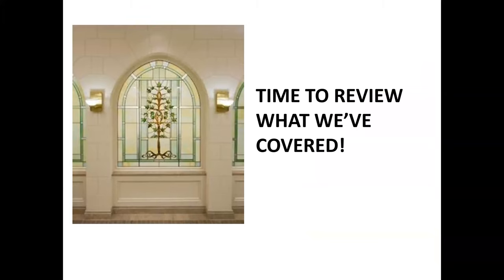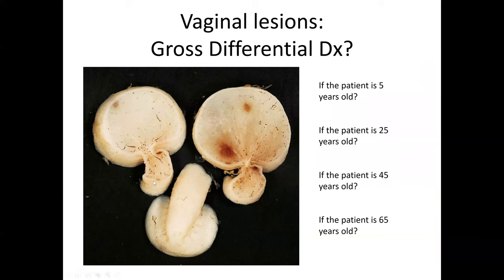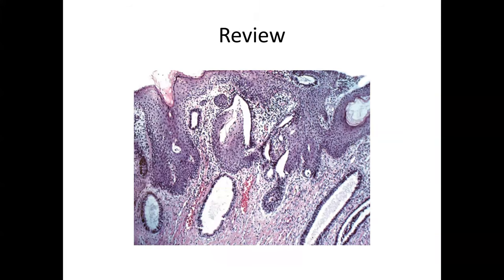In a quick review: a polypoid lesion with a myxoid-type stroma on a stalk illustrates how the same lesion in a child prompts thinking of sarcoma botryoides, in an adult fibroepithelial polyp, and in an older patient possibly a more concerning adult-type lesion — so age determines the differential. A low-power image with squamous epithelium and intermixed benign glandular appearances should make you think of vaginal adenosis.